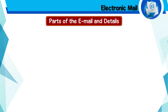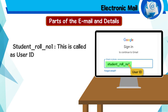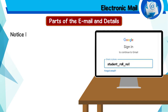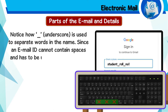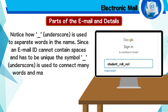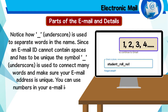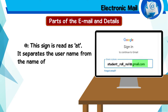Parts of the e-mail address: 'student_role_no1' is called the user ID and it is used to sign in to the e-mail service. Notice how the underscore is used to separate words in the name. Since an e-mail ID cannot contain spaces and has to be unique, the underscore symbol is used to connect many words and make sure your e-mail address is unique. You can use numbers in your e-mail ID as well. The '@' sign separates the username from the name of the e-mail service.